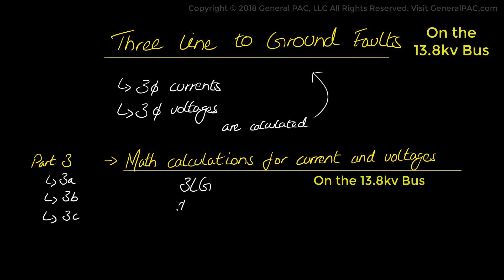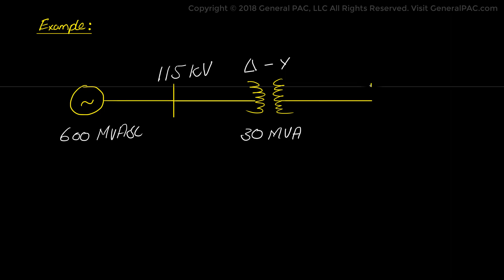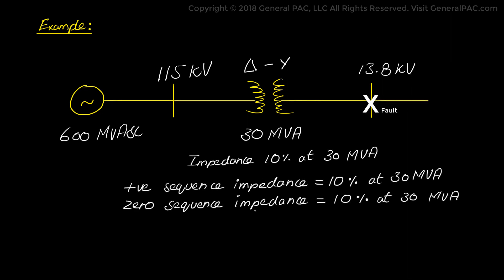3-line to ground, the 1-line to ground, the line to line, and the 2-line to ground faults. So let's continue with our first example which was introduced in the previous parts. We have a 3-phase synchronous generator having a short circuit capability of 600 MVA short circuit connected to a 115 kV bus. A delta Y transformer rated at 30 MVA connects the 115 kV bus to a 13.8 kV bus and has a positive and zero sequence impedance of 10% at 30 MVA.